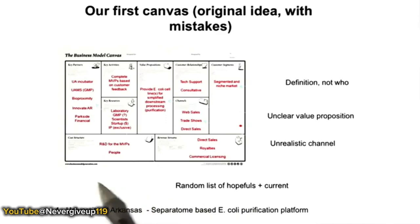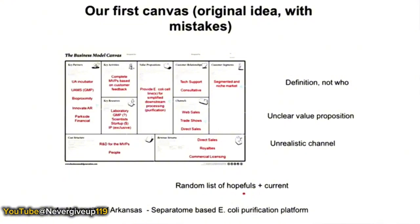For partners, when they looked at it, it really looked like a random list of hopefuls. Let's see how they evolved from that starting point — and you shouldn't laugh, because your first canvas might look like this too. What happened after they got out of the building?